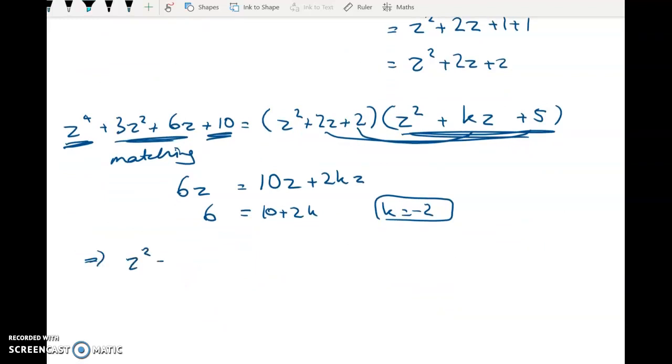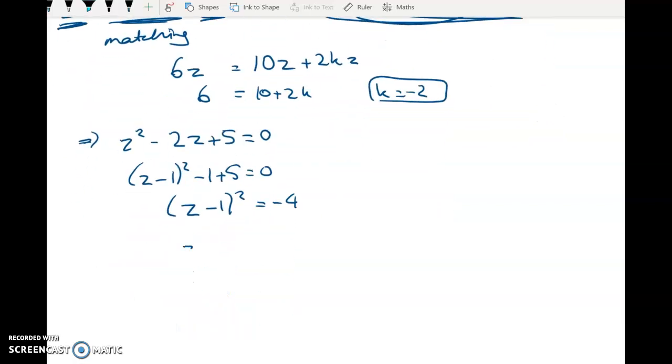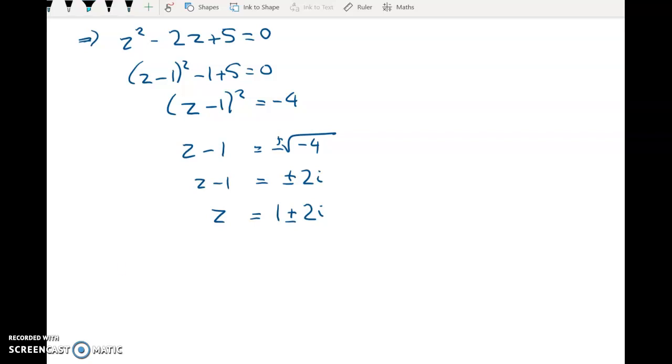Now for the very last step we've got this as a quadratic factor so z squared minus two z plus five has to equal zero because it's a factor and we get z minus one squared minus one plus five equals zero. Z minus one squared is equal to negative four. Z minus one is equal to plus or minus two i so my final two roots here, z is equal to one plus or minus two i. And we're asked to state the other three roots so the roots are negative one plus i, negative one minus i, and now one plus two i, one minus two i are the four roots.